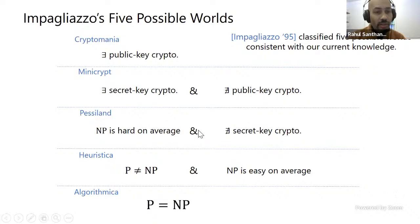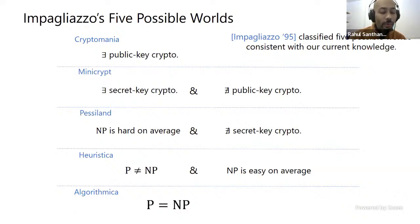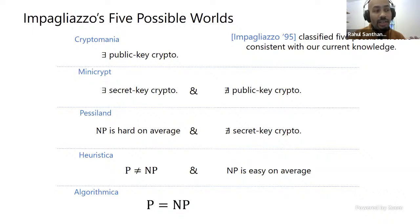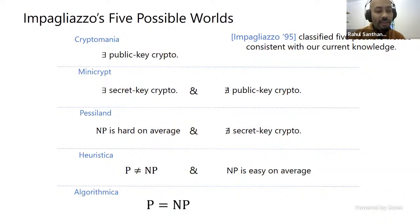So the question of connecting errorless hardness and error-prone hardness is very relevant to whether you can base one-way functions on worst-case hardness of problems like minimum time-bounded complexity. There is another notion of Kolmogorov complexity, K^t complexity, where recent work by Liu and Pass and by Ren and myself shows that in the errorless setting hardness is equivalent to E ≠ BPP, but hardness in the error-prone setting is equivalent to the existence of one-way functions.